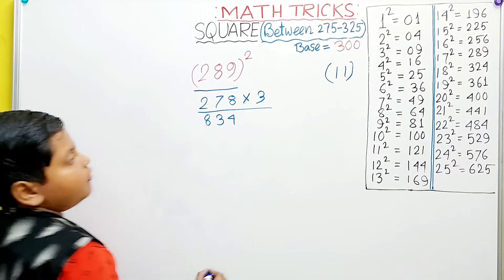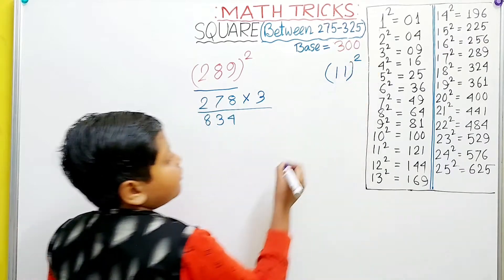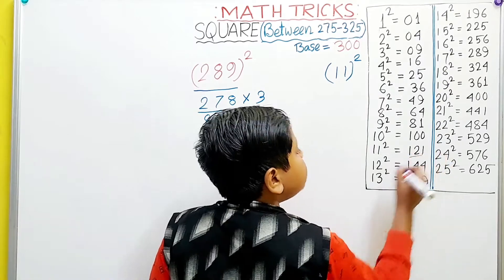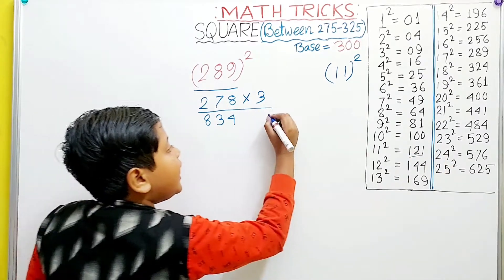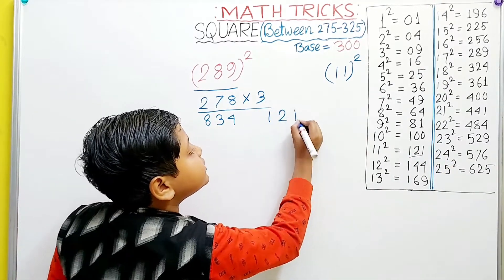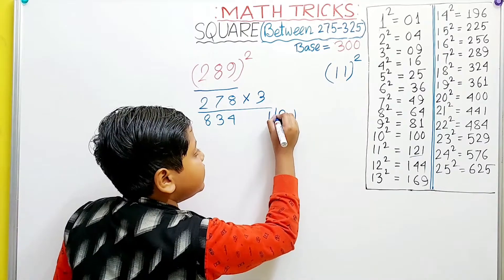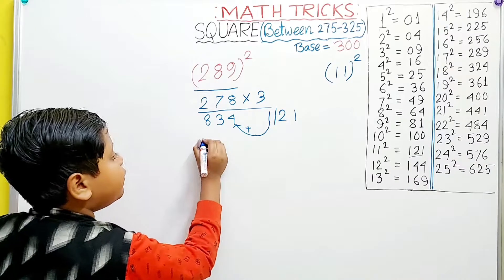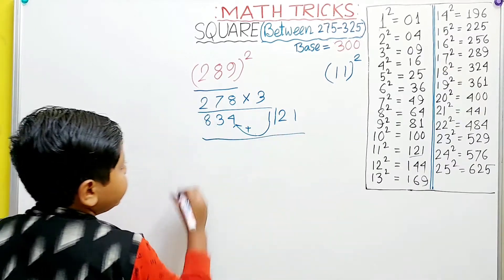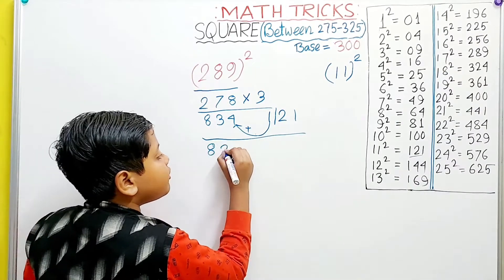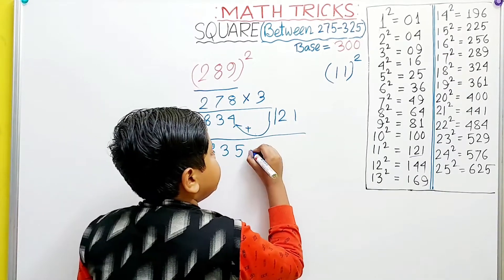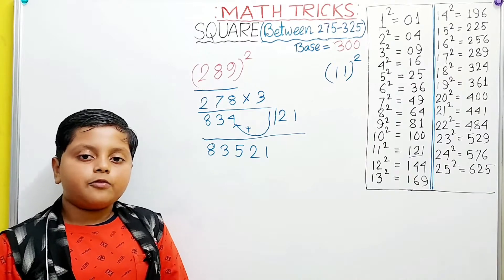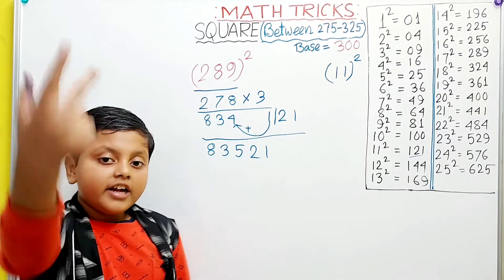Now we have to do 11 squared which is 121. I remembered that it is a 3-digit number. So we will add 1 to 834 and then write 21 next to it. 834 plus 1 equals 835 and then we will write 21. And this is our answer, 83521. We will take our next example.